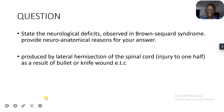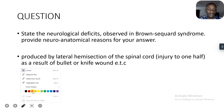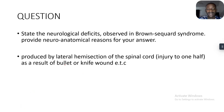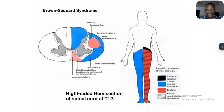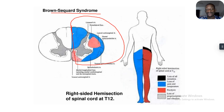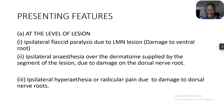Brown-Séquard syndrome is produced by the lateral hemisection of the spinal cord — that is, injury to one half of the cord, as a result of maybe a bullet or knife wound. Hemisection means half-sectioning of the cord.